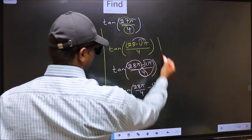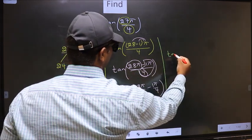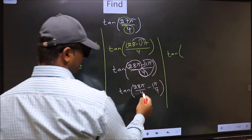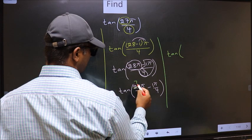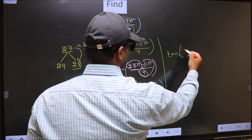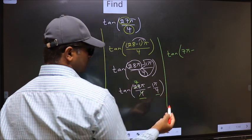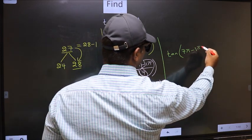Next, tan. Now, here, you should cancel. 4 ones, 4 sevens. So, we get 7π minus this no change, 1π by 4.